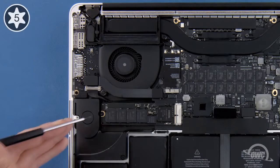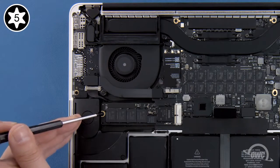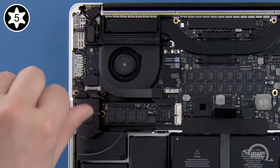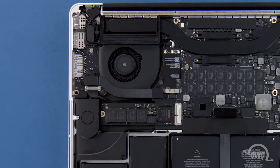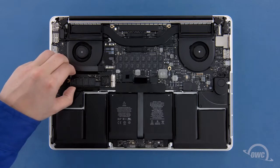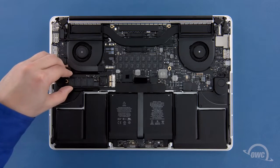To remove the SSD module, you'll first need to remove the single Torx T5 screw holding the end in. Once the screw is removed, you can gently slide the SSD module out of its socket.